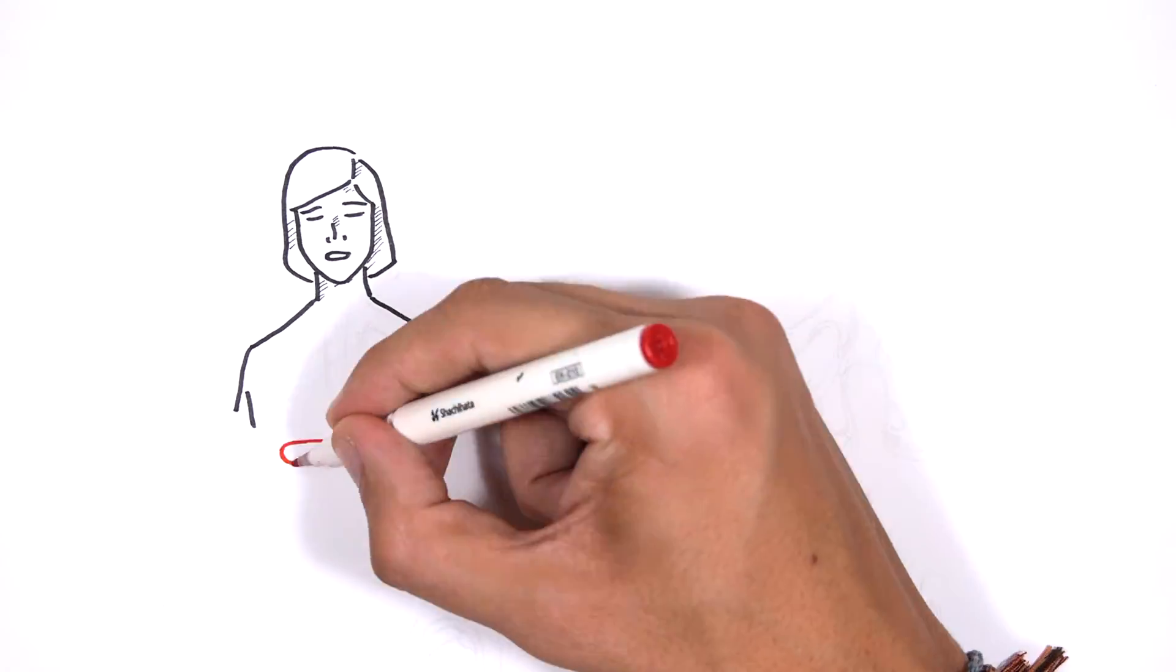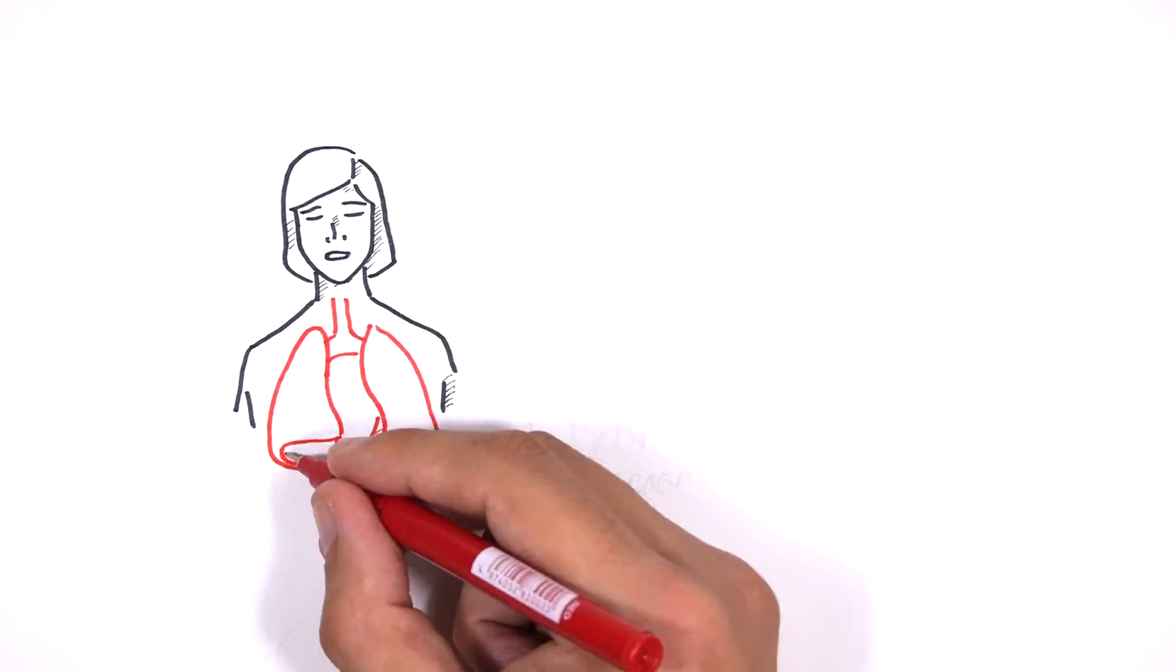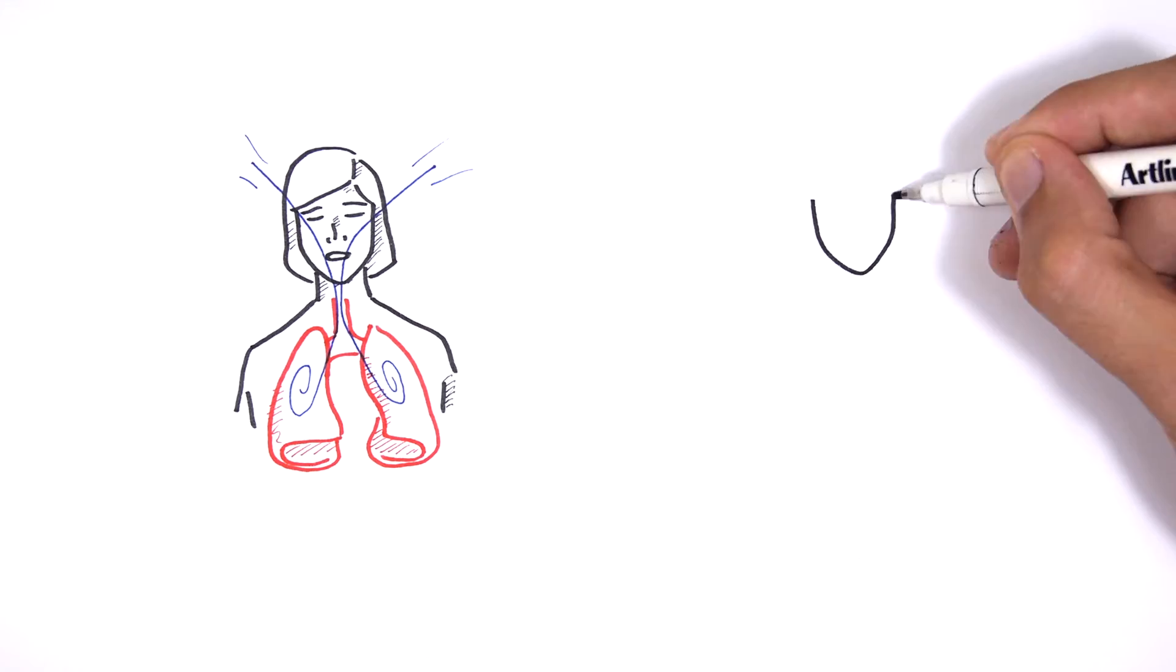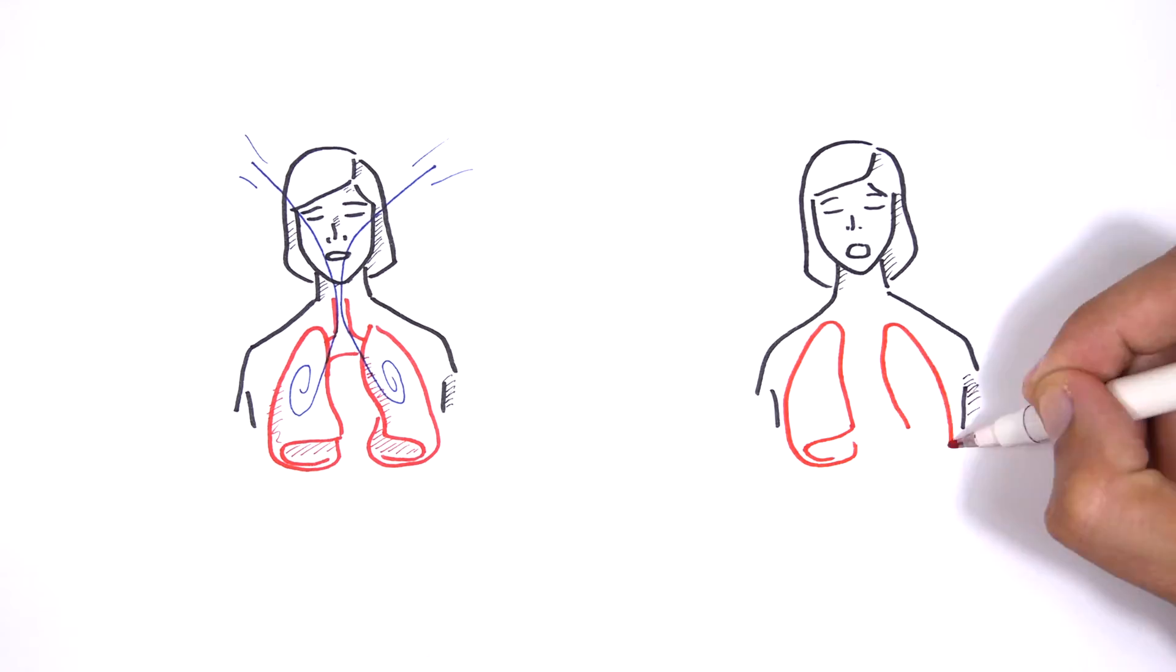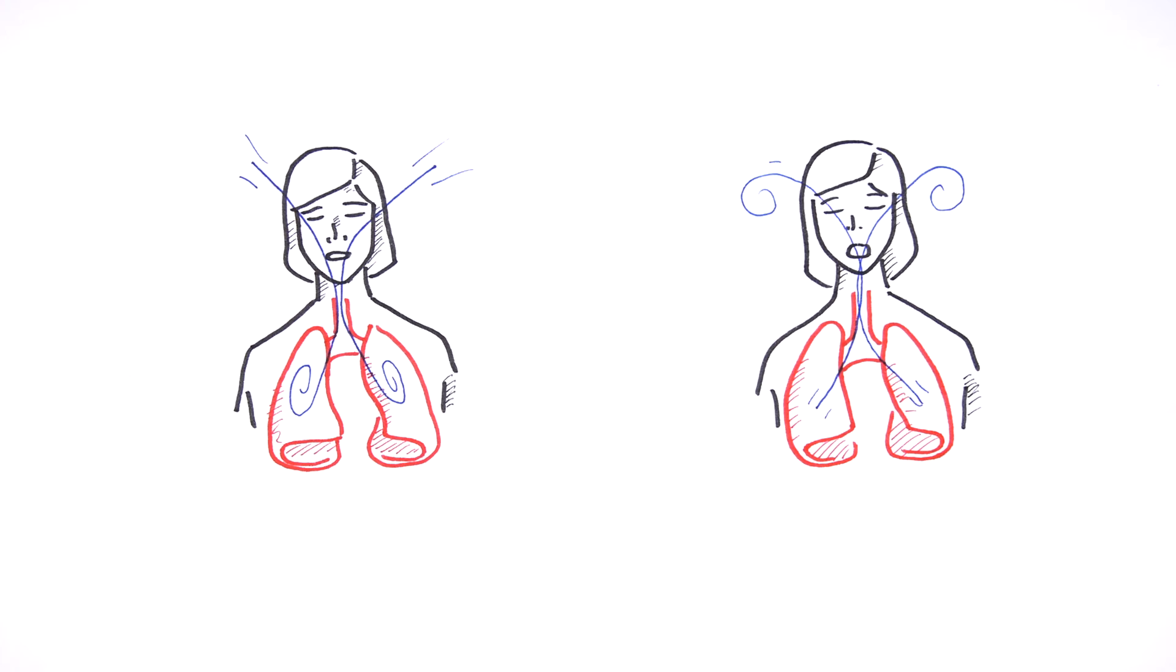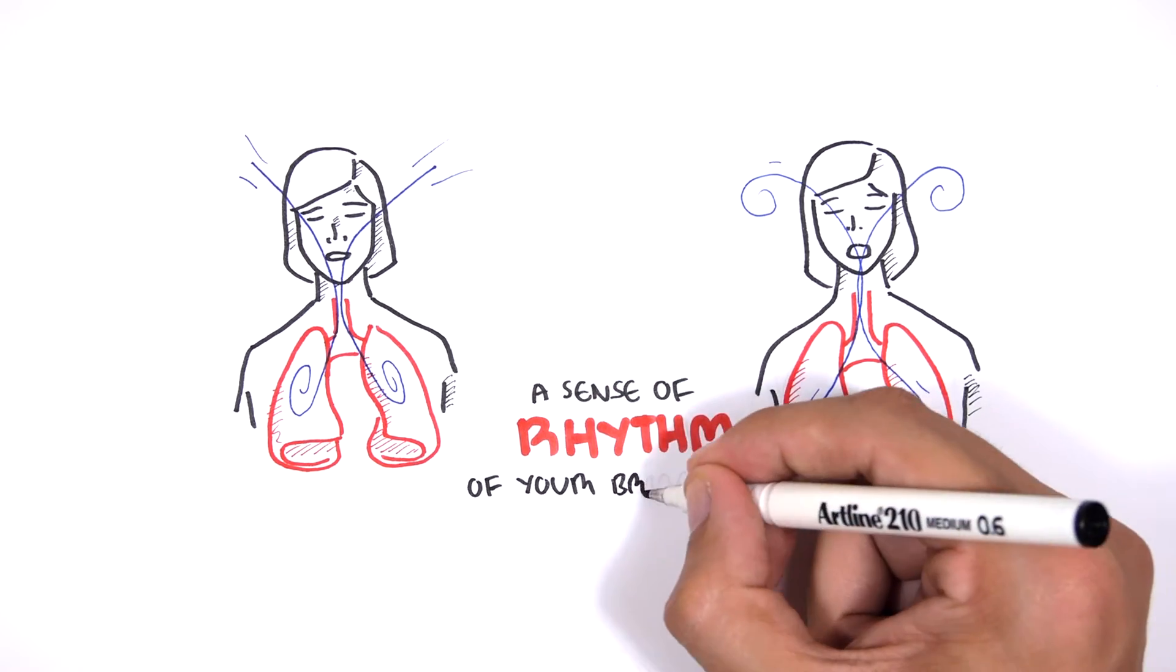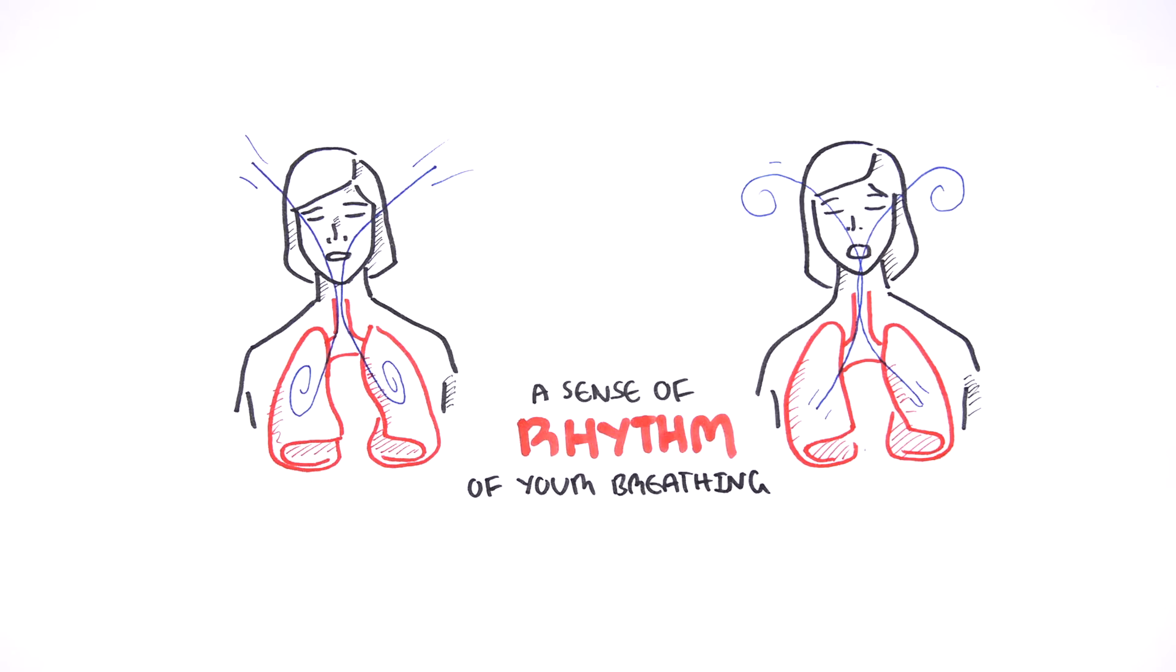First, as your provider prepares the lumbar puncture procedure tray, breathe in deeply and feel the energy that the air brings into your lungs. Notice how your mind is ready to focus. Now exhale and note the feeling of release from anxiety that goes with this bodily sensation. Releasing the air is like letting go of your stress and strain. Now try to achieve a sense of rhythm of your breathing, with deep breaths in and relaxing breaths out.